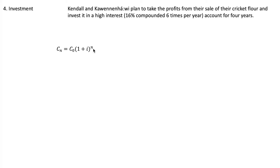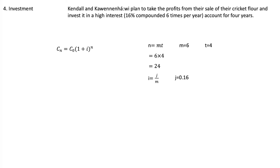The compound interest growth formula is C_N = C₀ × (1 + i)^N, where N = M × T. M is the number of compounds per year — six in this case — and T is four years, so N = 24. i = J divided by M, where J is the nominal annual rate of 16%, or 0.16, divided by 6, giving 0.02666 repeating. Don't round this value, or you will get a different answer.